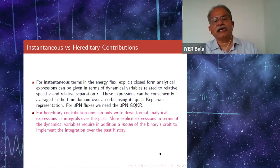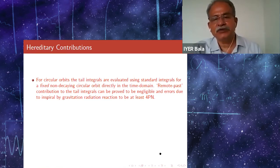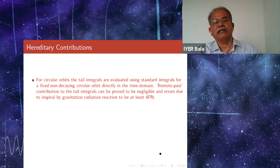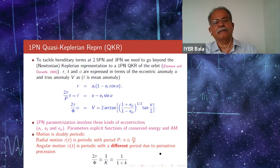But on the other hand, when you look at the hereditary contribution, you can only write down formal analytical expressions as integrals over the past. If you need more explicit expressions in terms of dynamical variables, you would need a model of the binary's orbit to implement the integration for the past history. When you look at circular orbits, the tail integrals could be evaluated using standard integrals for a fixed non-decaying circular orbit directly in the time domain. In the elliptic orbit case, the situation is more complicated. Even after using the quasi-Keplerian representation, you cannot do the integrals in the time domain since the multipole moments have a more complicated dependence on time. Therefore, one evaluates this by going to the frequency domain.